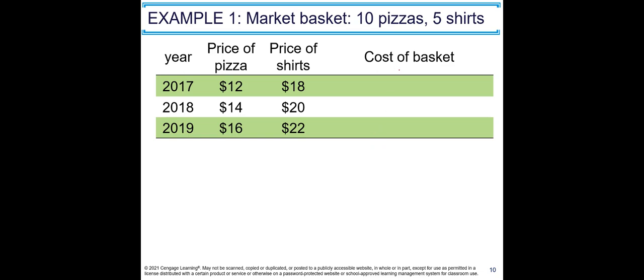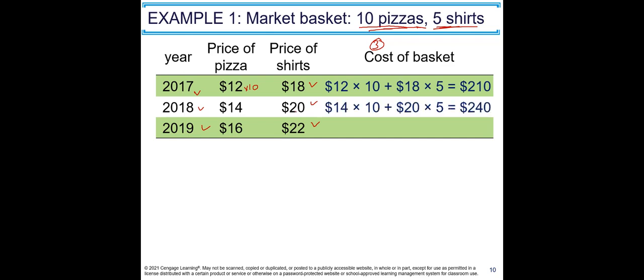Let's do an example. Step one — fix the basket: consumers buy 10 pizzas and 5 shirts every year; quantities are fixed. Step two — find prices for 2017, 2018, and 2019. Step three — calculate the cost of the basket. In 2017: 12 × 10 + 18 × 5 = $210. In 2018: 14 × 10 + 20 × 5 = $240. In 2019: the cost of the basket is $270.